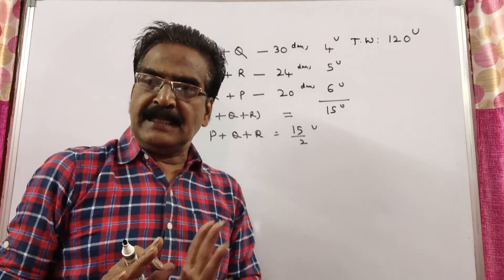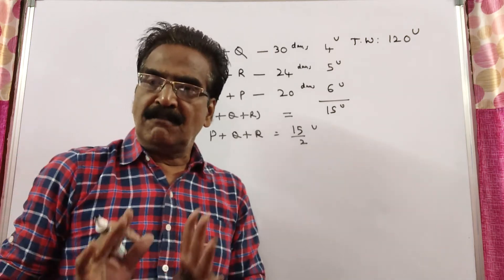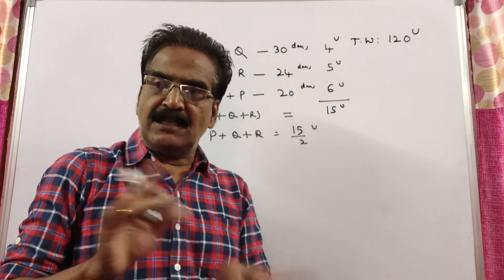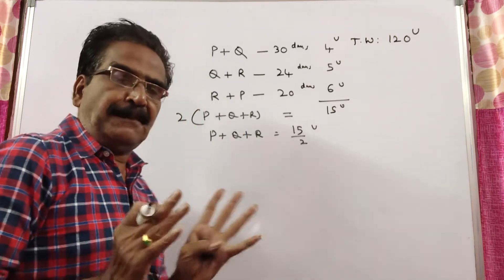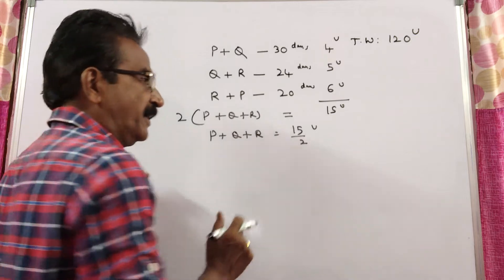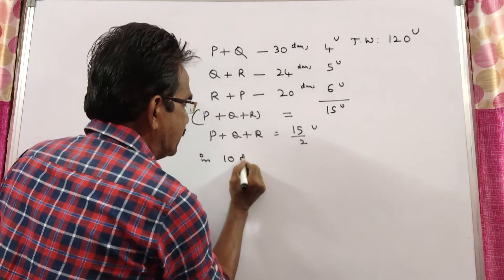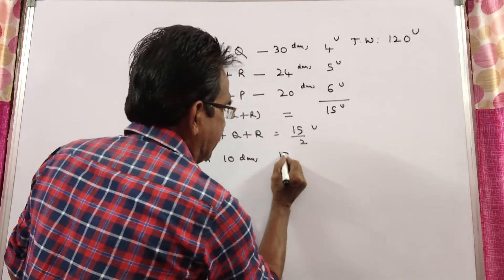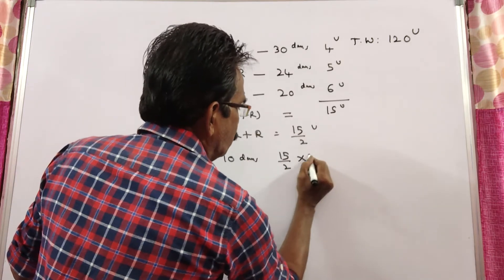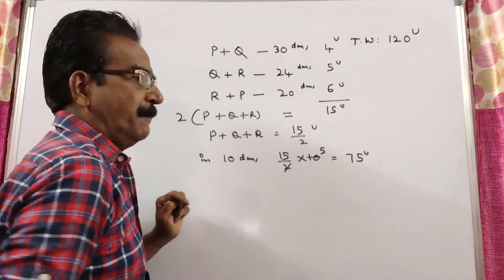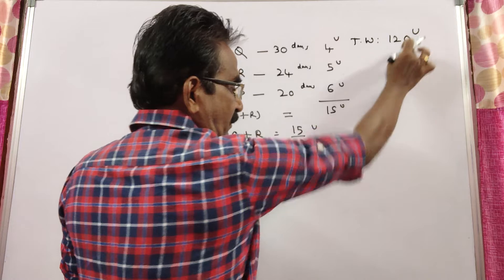They work together, P plus Q plus R work together, started working together and after 10 days, Q and R left. That means P plus Q plus R worked for 10 days. In 10 days, how much work will be completed? 15 by 2 into 10, so 75 units of work will be completed and the remaining work,